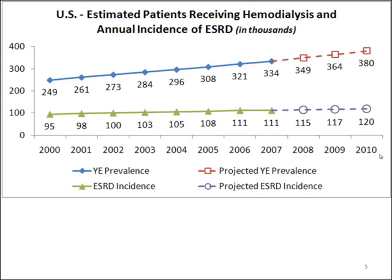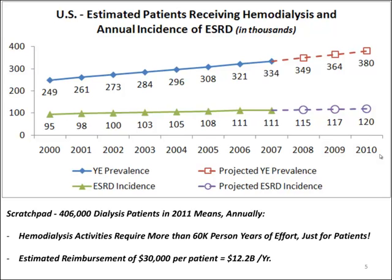This is a big deal. In 2010, there were 380,000 patients receiving hemodialysis in the United States. The incidence of end-stage renal disease, of which the majority will move to hemodialysis, was 120,000 per year. For 2011, now with 406,000 patients, just think about the implications. Looking at 3 sessions per week for 4 hours per session, traveling an hour to and an hour from, that amounts to more than 60,000 person years of effort just to receive the basic treatment. At the estimated reimbursement rate of $30,000 — a reduction from previous levels — this still costs over $12 billion a year.